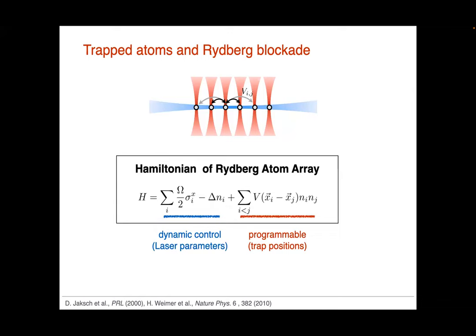To write it down: this will be the many-body Hamiltonian that we're going to talk about. It's tunable in the sense that the laser parameters will be tunable in a time-dependent way, which allows us to control omega and delta. The positions of these atoms can be programmed in to realize different types of interaction structure between our atoms, depending on how we place them.